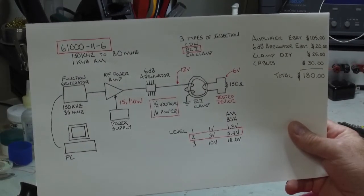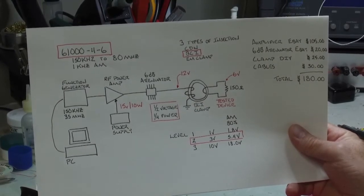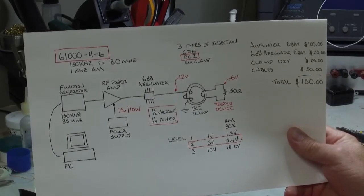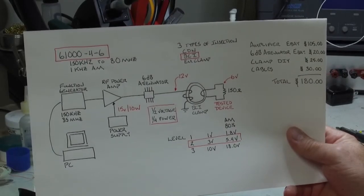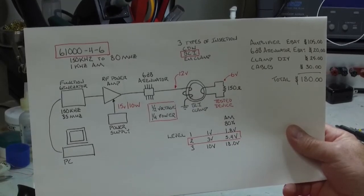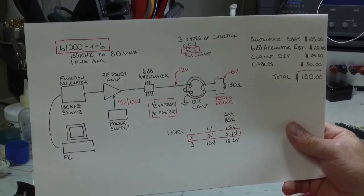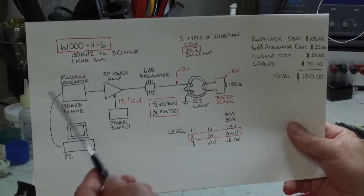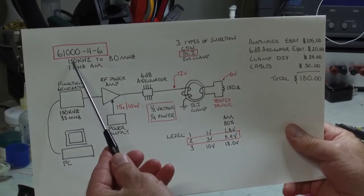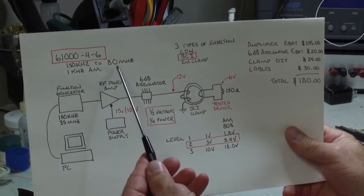Here is the block diagram of the conducted immunity test. I probably need to state that I would not call myself an expert with this system, but I have gone through this test probably a couple of dozen times at some local compliance labs. The setup basically consists of a function generator and this function generator needs to be able to sweep the range between 150 kilohertz to 80 megahertz.